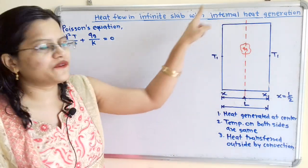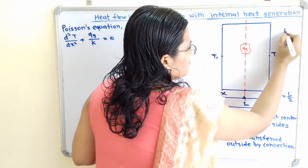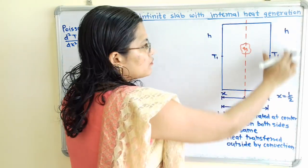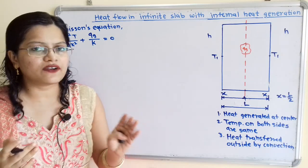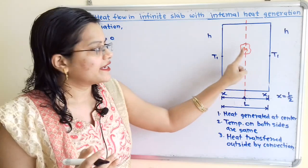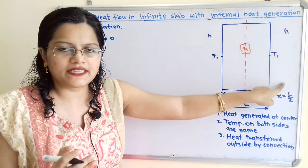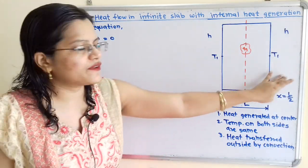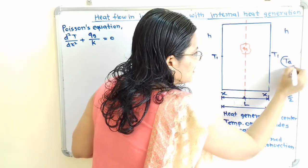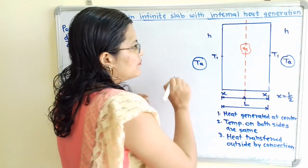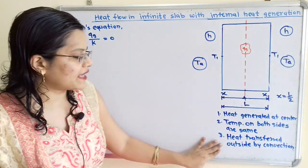Outside the slab there is a fluid with convective heat transfer coefficient H. This fluid is in contact with the surface of both sides, and heat transfer from the slab surface to the fluid takes place by convection. From the heat source to the slab surface, heat transfer is by conduction through the solid material, and outside the slab heat transfer is by convection. The temperature of the outside fluid is TA, and H is the convective heat transfer coefficient. This completes the diagram as per the given conditions.